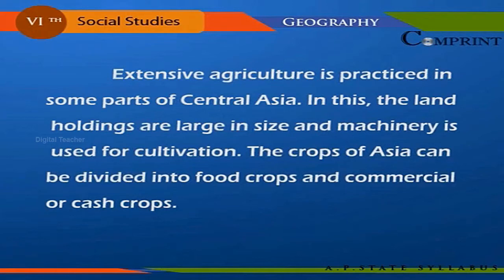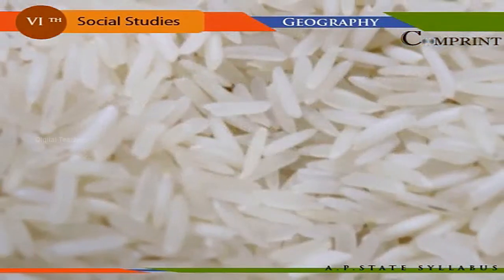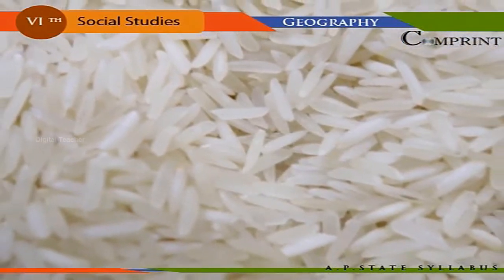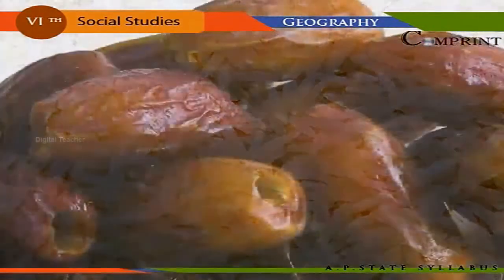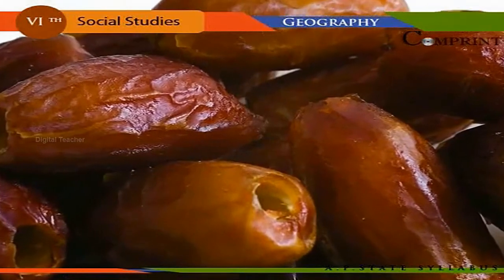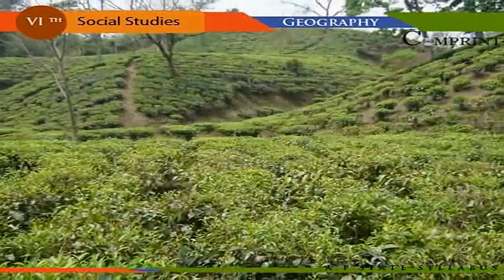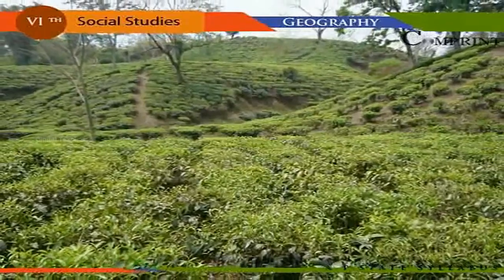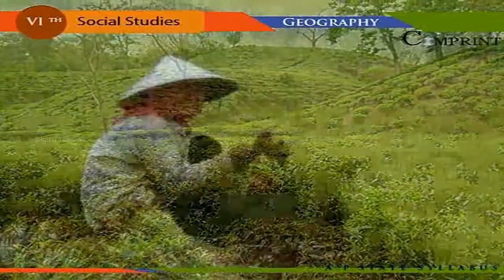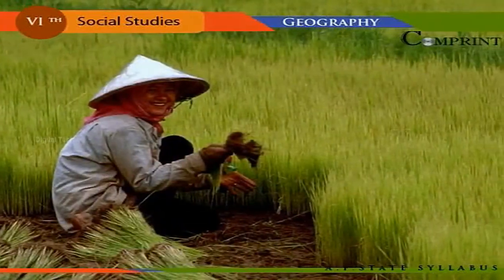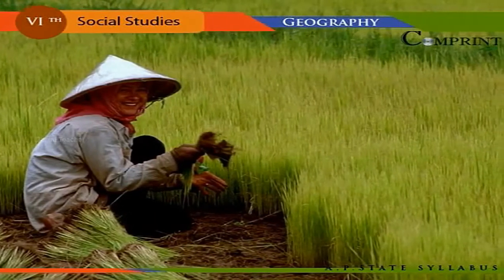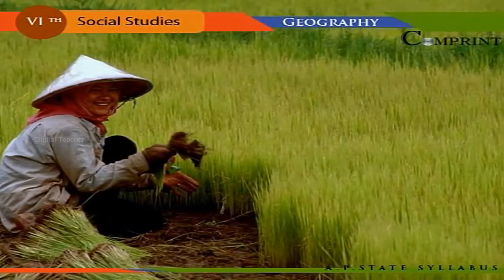The crops of Asia can be divided into food crops and commercial crops. Rice, wheat, ragi, dates, and millets are some of the food crops. China, India, Bangladesh, Japan, and Southwest Asian countries are the main producers of rice. Wheat is grown mostly in China and northern India.